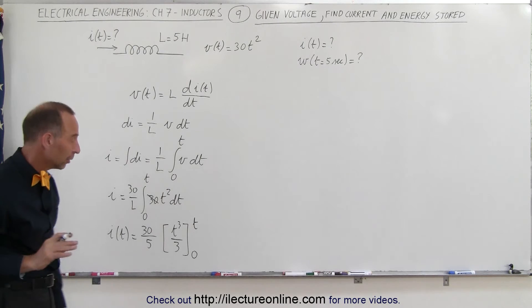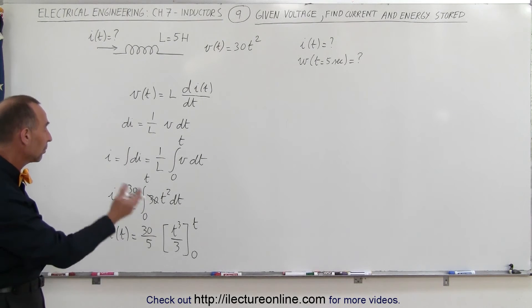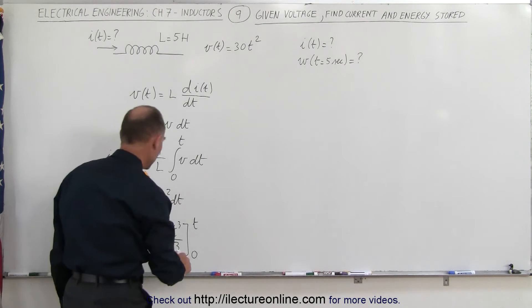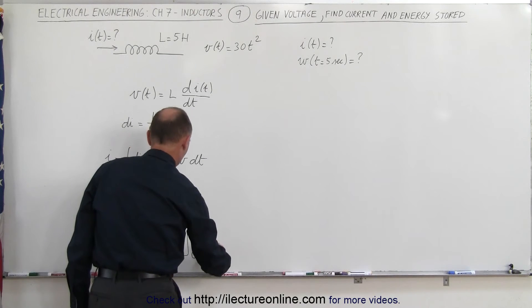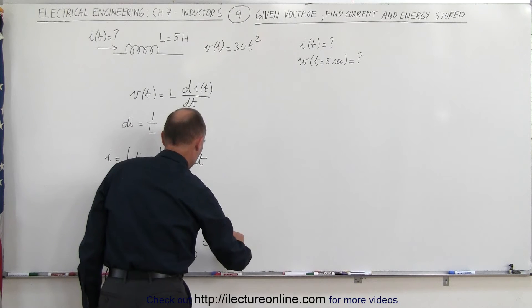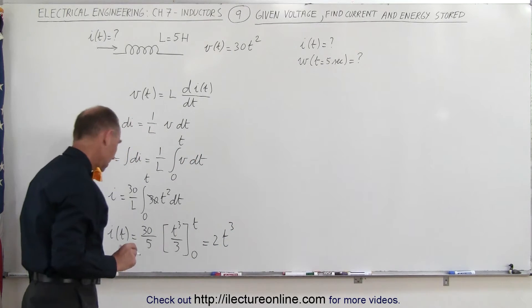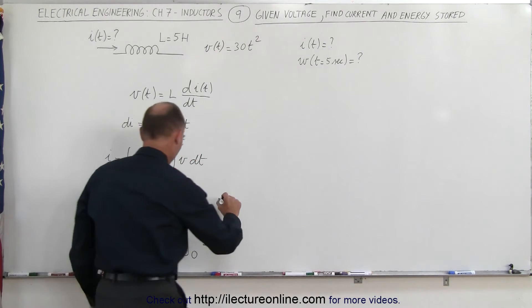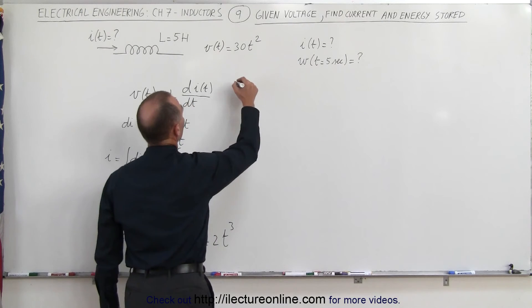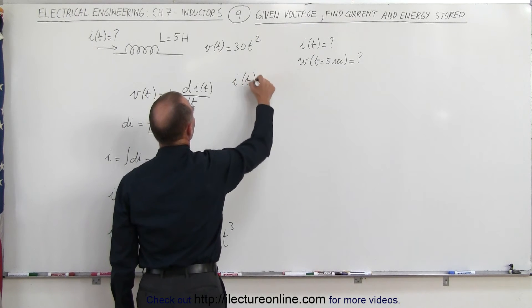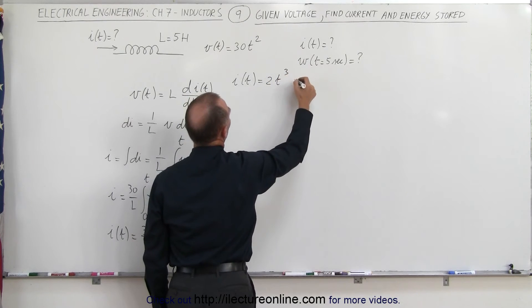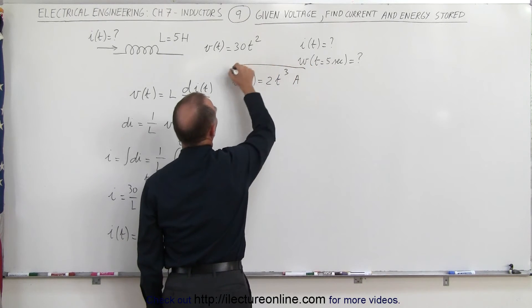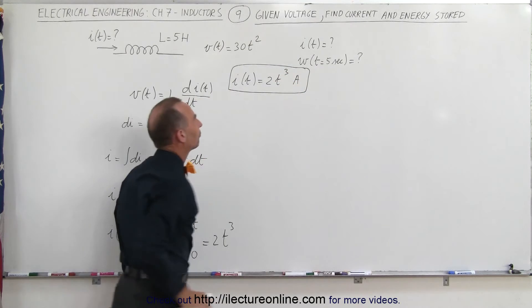Now when we plug in the lower limit zero we get nothing. When we plug in the upper limit we simply get T cubed. Three goes into 30 ten times. Ten divided by five is two. So this becomes equal to 2T cubed. So we can say that I as a function of time is equal to 2T cubed and of course the units would be in amps if we put in the proper units for time.